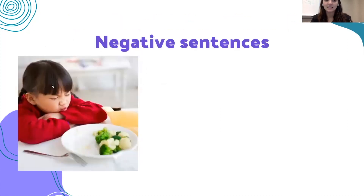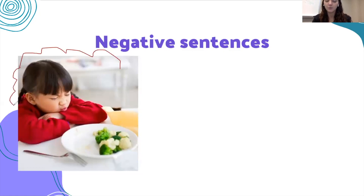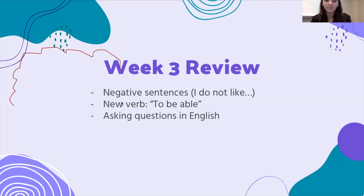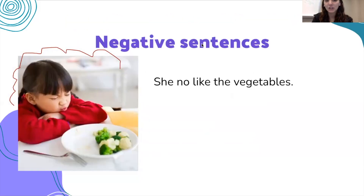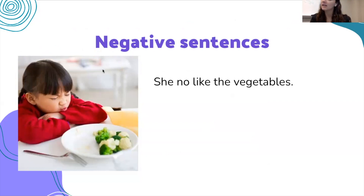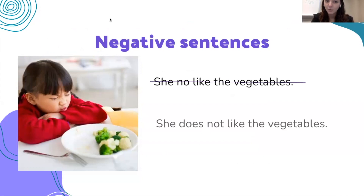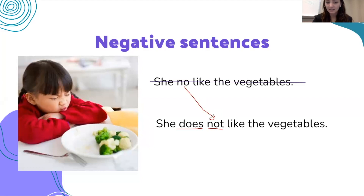Next we learned about negative sentences. Think about this picture — how would you describe it? Maybe you would say 'she no like the vegetable,' because that is pretty similar to Portuguese. But in English we cannot say this — it does not make sense. Instead we have to add 'do.'